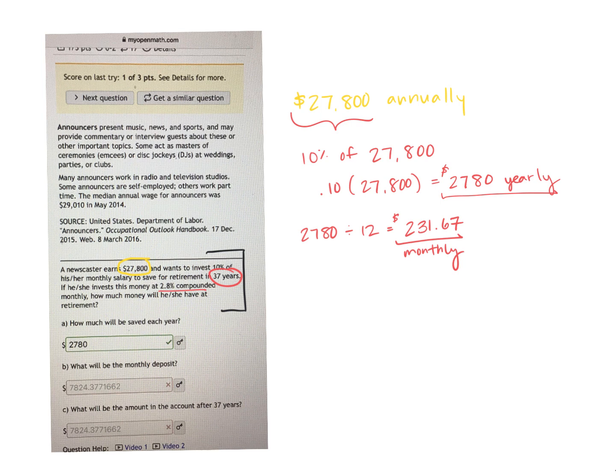So again, this is going to be the payment amount, and it is going to be savings that he's doing, so it's going to earn money for every single one of these payments that he makes monthly. So we're going to use the formula, P sub N, to find out how much money he'll have after those 37 years.